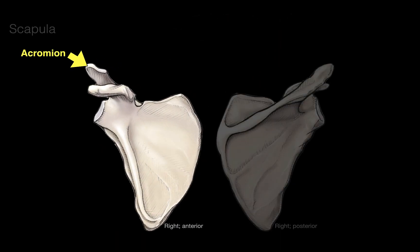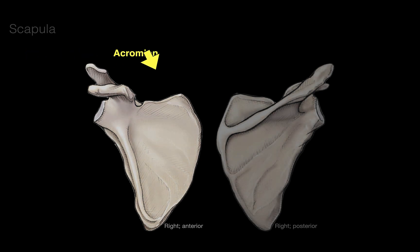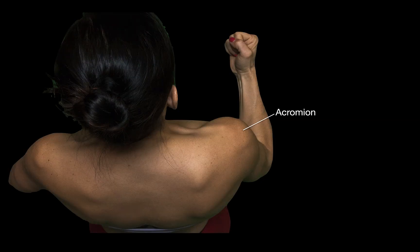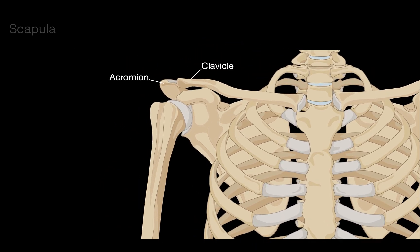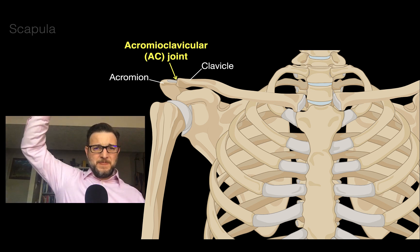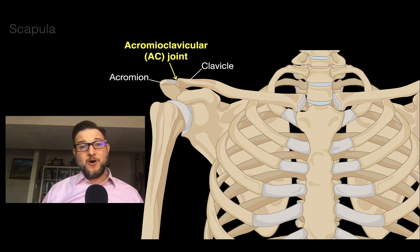There is the acromion in the anterior view, and there's the acromion on the posterior view of the scapula. It's quite a large flat surface. The acromion also articulates with the clavicle, and between the acromion and clavicle is a joint called the acromioclavicular joint — abbreviated AC joint. It's a synovial plane joint, and it's the strut joint where the clavicle articulates with the scapula, allowing you to move your arm up and down with great mobility.